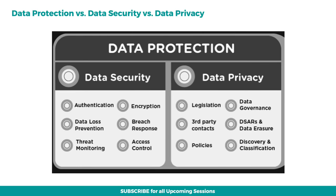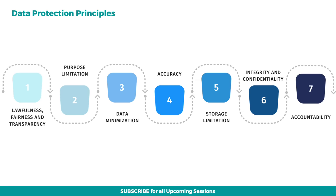Data protection is a combination of data security and data privacy. Data protection is the process of safeguarding important information from corruption, compromise, or loss. The seven principles of data protection include: lawfulness, fairness, and transparency; purpose limitation; data minimization; accuracy; storage limitation; integrity and confidentiality; and accountability.